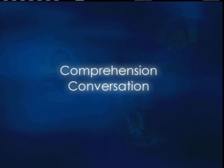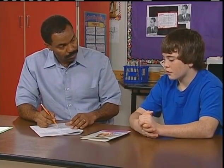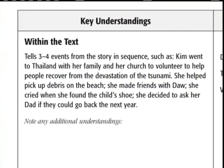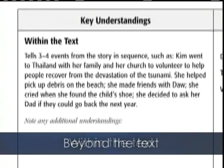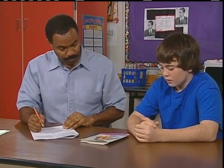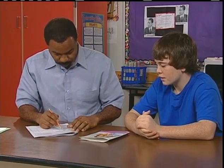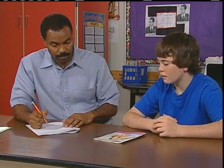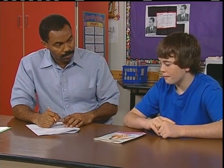After the student finishes reading, engage the student in a comprehension conversation. The conversation is an open-ended invitation to talk. On the recording form, you'll find a chart of key understandings — important ideas that the reader should have gleaned from within, beyond, and about the text. For example, a student might explain that the young girl wanted to go to a camp out, but her dad wanted them to go to Thailand to help with tsunami relief from 2004, and that was the turning point when she understood how much people had lost and that they could never get it back.